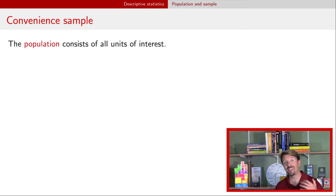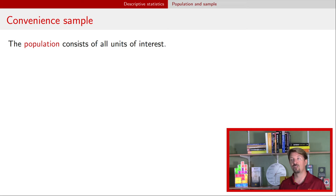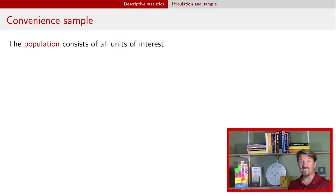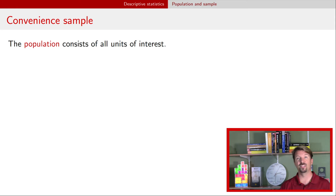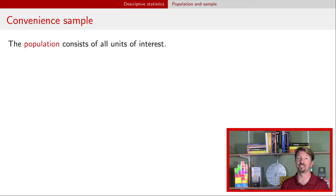If we're going to make a statement about a population, we need to define what the population is. Very broadly, the population is the entire collection of all the units of interest. For instance, you might be interested in the population of U.S. people, or all big foam dice, or here in Iowa, all farmland in Iowa — that would be your population of interest.